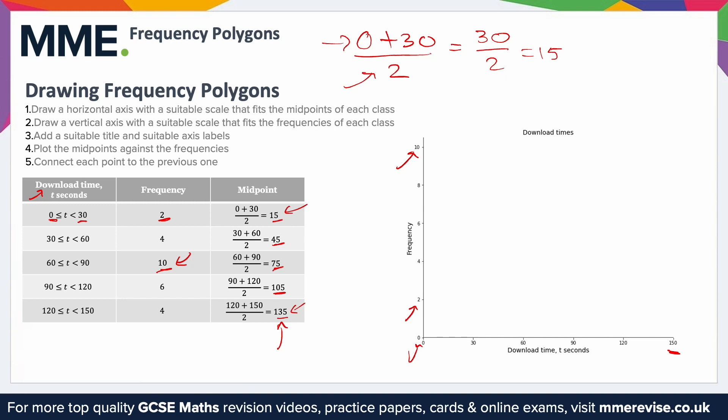From there, we can plot some points. So you're going to plot the midpoints against the frequencies. What that means is the midpoints are going to be the X values, and the frequency is going to be the Y values. From there, you can plot that and do step 5, which is connect each point to the previous one, and that results in this shape. So you can see, for example...